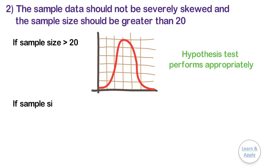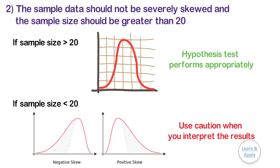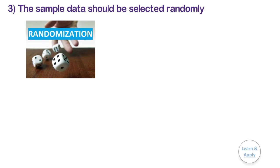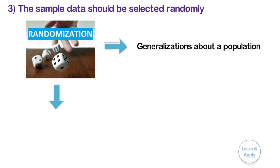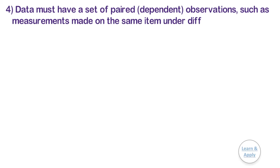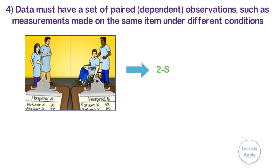3. If your sample size is less than 20, you should graph the data to check for skewness and unusual observations. If the data is severely skewed or has many unusual observations, use caution when you interpret the results. 3. The sample data should be selected randomly. In statistics, random samples are used to make generalizations or inferences about a population. If your data is not collected randomly, your results may not represent the population. 4. Data must have a set of paired or dependent observations, such as measurements on the same item under different conditions. If you have two samples of independent observations, then use the two sample t-test.